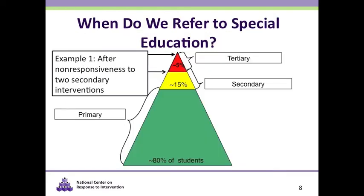When do we refer to special education? Referrals, whether after non-responsiveness to secondary interventions or non-responsiveness to tertiary interventions, must be in accordance with state law and/or district policies. If your state does not clearly indicate when to refer students, it's important to develop a district model in accordance with federal and state law. There is no single model for when special education referrals occur. Importantly, regardless of state and local rules regarding when a teacher or school-based person might make a referral, parents under federal law have the right to refer their child at any point in the process.